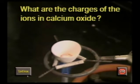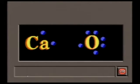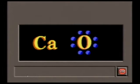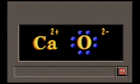Calcium reacts with oxygen to form calcium oxide, an ionic compound. What are the charges of the oxygen and calcium ions? Calcium loses two electrons, giving it a charge of positive two. The oxygen ion has a charge of negative two because it gains two electrons. These opposite charges attract, holding the ions together in a crystal.